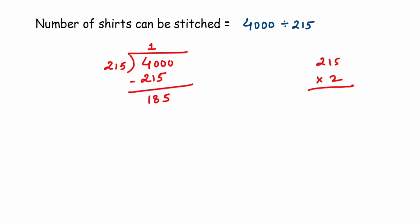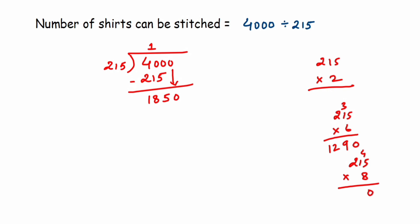Now we need to find how many times 215 goes into 1850. Trying 215 × 6: 6×5=30, 6×1+3=9, 6×2=12, giving 1290 — that's too small. Trying 215 × 8: 8×5=40, 8×1+2=10, 8×2+1=17, giving 1720, which is close to 1850. Multiplying by 9 would exceed 1850, so we use 8. Subtracting 1720 from 1850 gives a remainder of 130.